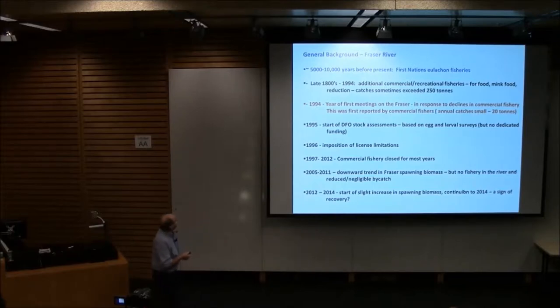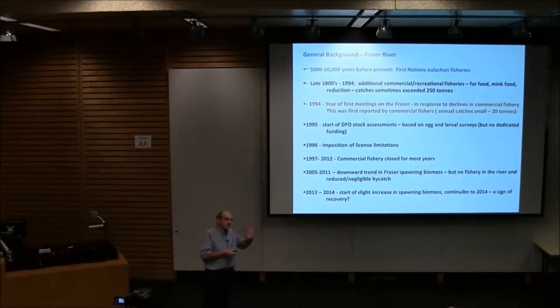Just a little bit more background. Eulachons have been around for a long time. They were around when mammals were rodents, since the dinosaur time. In this part of the world, the knowledge of them was restricted to First Nations. In the late 1800s, there was a fairly big commercial fishery up in the Nass. The fishery is mainly for a little bit for food, a lot for animal food, mink food. The catches in the Fraser sometimes got up to about 250 tons.